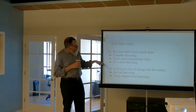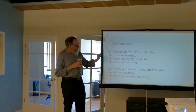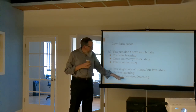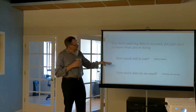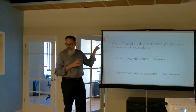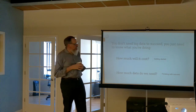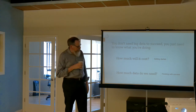To summarize: two low-data cases. You just don't have much data — we talked about transfer learning, finding or making new data, and few-shot/one-shot learning. You've got a bunch of data but few labels — we covered active learning for being smart about which things to label given limited resources, and semi-supervised learning to leverage unlabeled data with algorithms. The 'Unreasonable Effectiveness of Data' said if you can get a bunch of data, just throw it at a model and things work out. If you can't, you need to be a little more clever — but there's an enormous number of methods out there you can take advantage of.